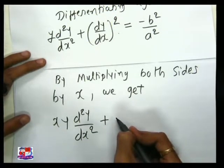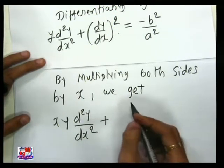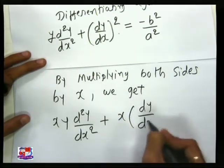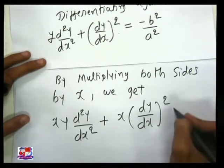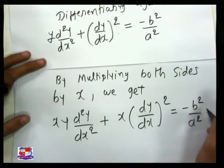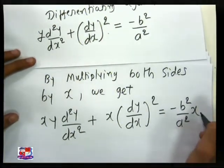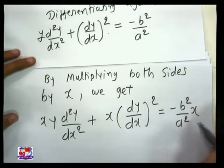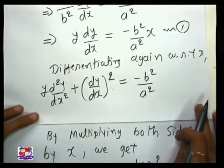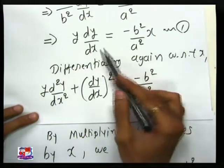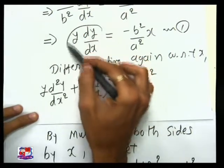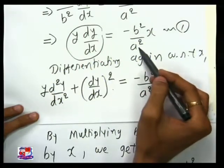Continuing, x is equal to minus b²/a² into x. Now, minus b²/a² into x equals y·(dy/dx) from equation number one. So I am going to put y·(dy/dx) instead of minus b²/a² into x.